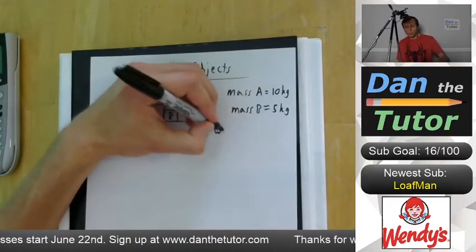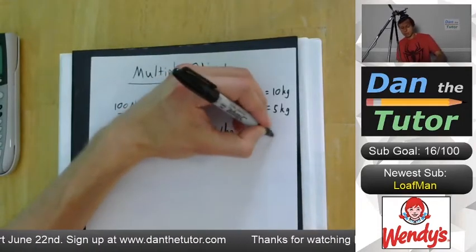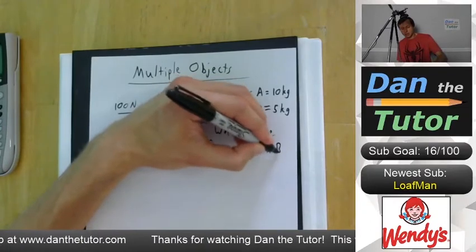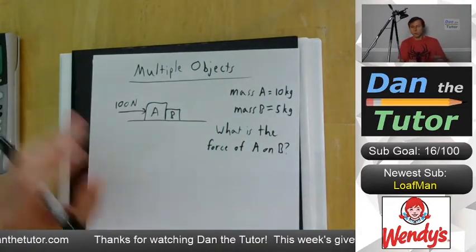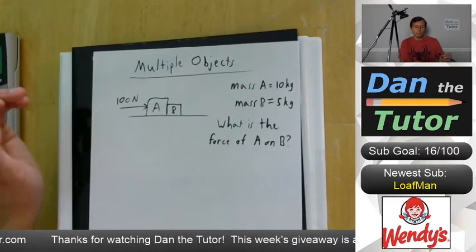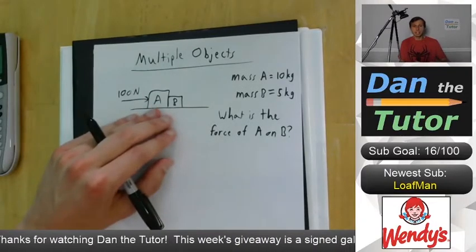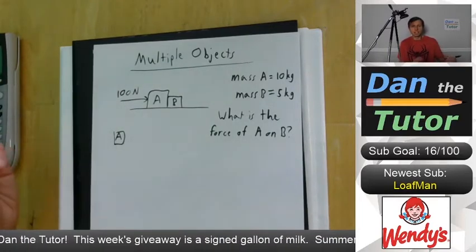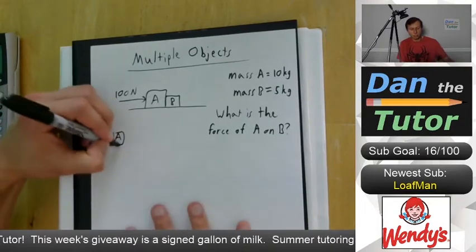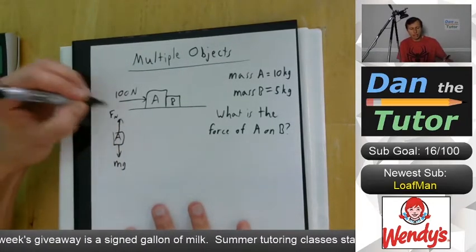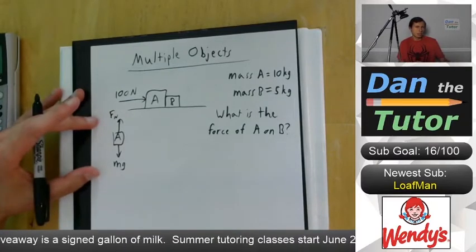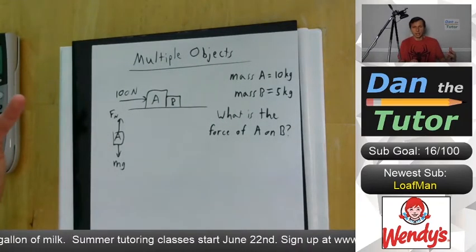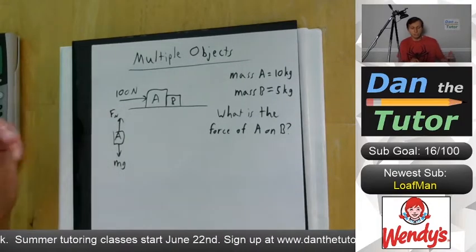If I were to ask: what is the force of A on B? Here's how we would solve it. The very first thing we do is draw free body diagrams — separate ones for each object. For box A, we have gravity going down and a normal force going up. Those two forces aren't really going to matter here since we're looking at the X direction, but we include them. And then we have a 100 Newton force pointing to the right.